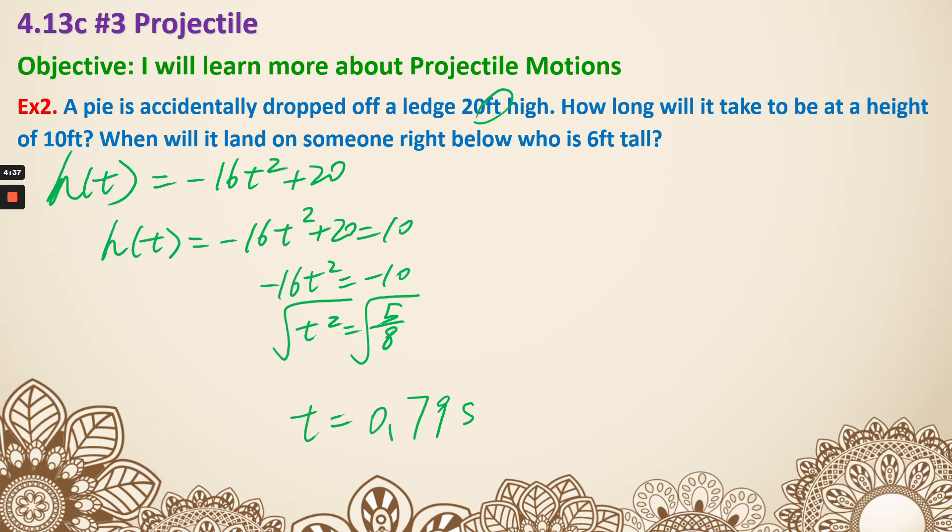The other question is asking when will it land on someone right below who is 6 feet tall. So this time I'm going to calculate for negative 16t squared equals negative 14. So t squared is 7 over 8. I'm still taking square root. So that means it's going to give me 0.94 seconds. That's example 2.